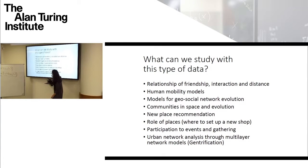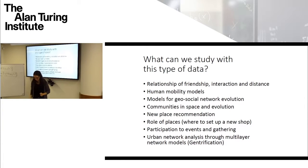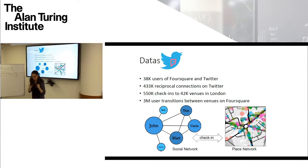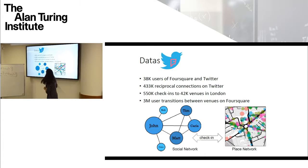I will concentrate for some minutes on work on urban network analysis using multi-layer network models. We have targeted some gentrification concepts there. The data we use for this particular study is Foursquare data that we collected through a crawl through Twitter, which means we have the Twitter social network and the Foursquare place network — so we have two networks, and the numbers are quite large. This is just for London.